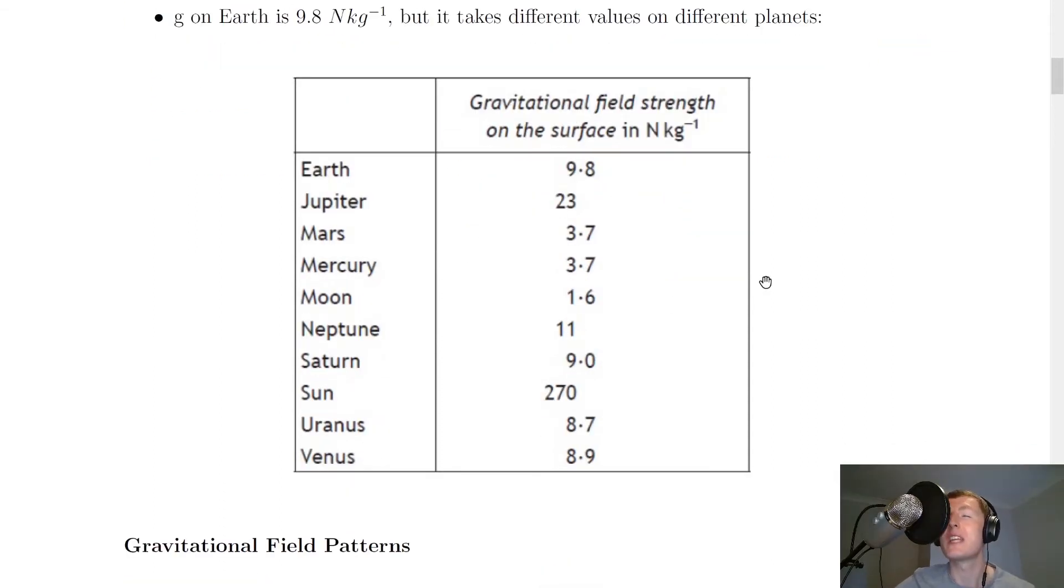So here's the table that you don't get on the data sheet in the exam, but it's here for interest to show you the different values. Chances are, if you were asked to use one of these values in the exam, you would be given it, unless it was the Earth or the Moon. And the Moon has a g value of 1.6.